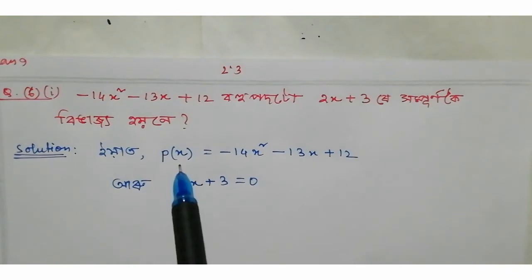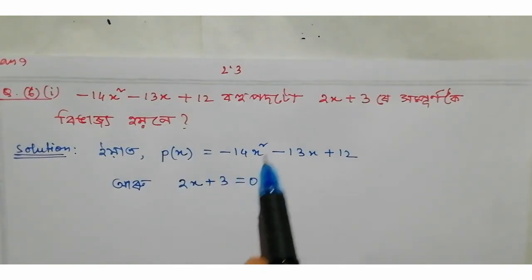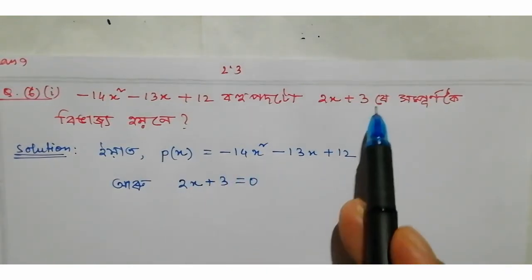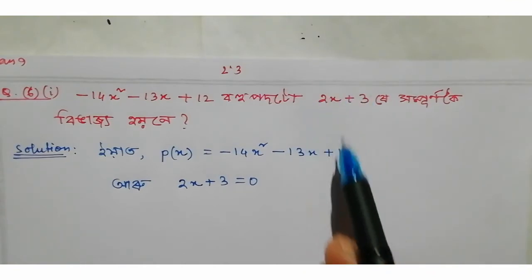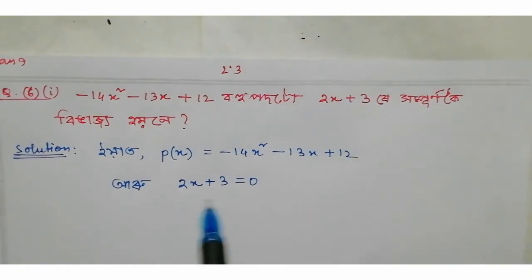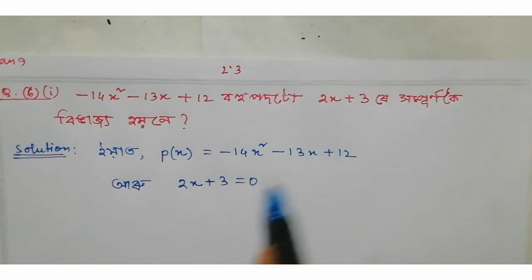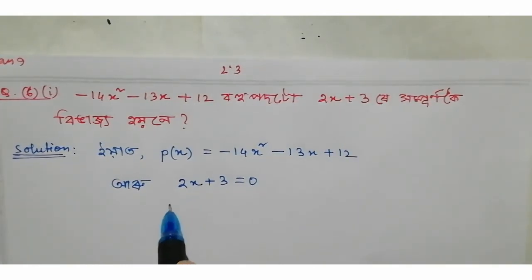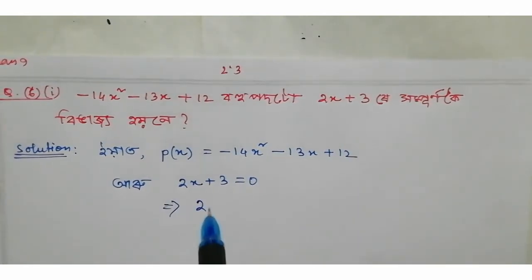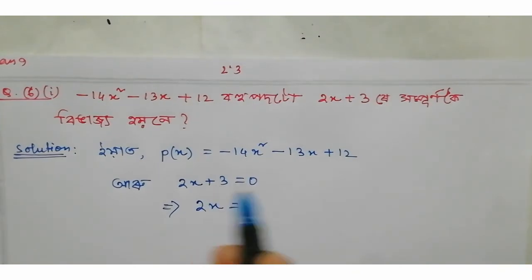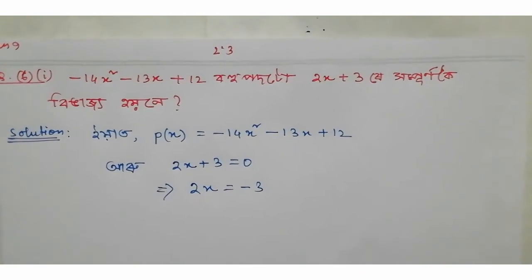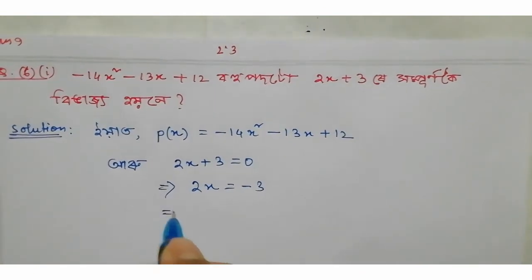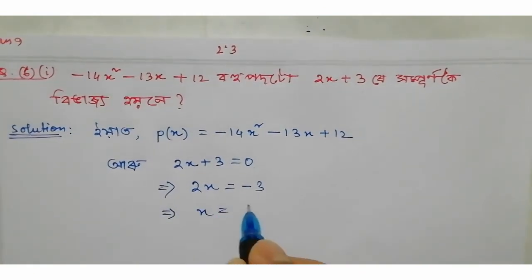The second question is x equals x. We will set up x to x. It is x equals to x, minus 3 by 2.